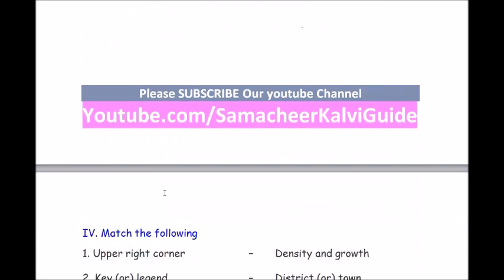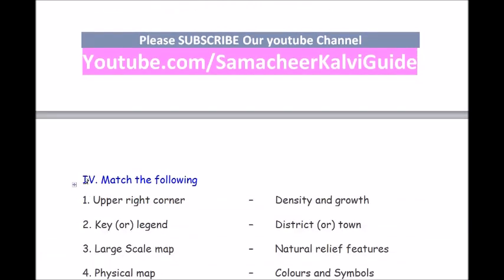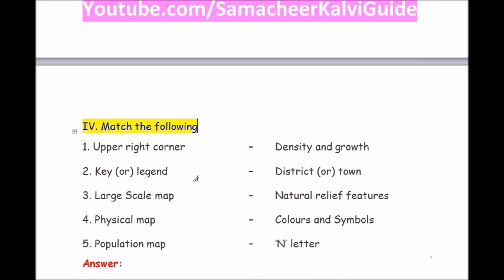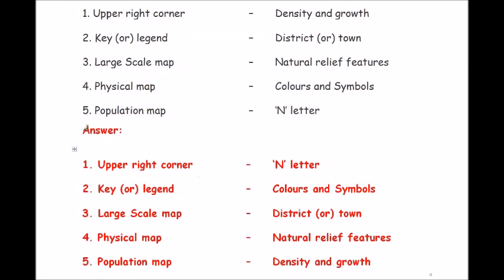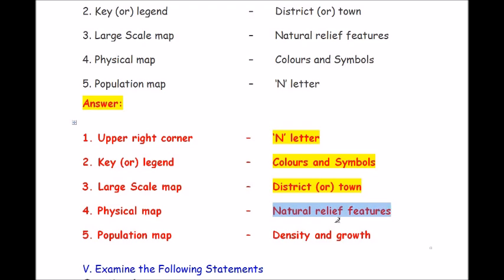Now let us move to Roman number 4, match the following. Upper right corner — N letter. Key or legend — colors and symbols. Large scale map — district or town. Physical map — natural relief features. Population map — density and growth.